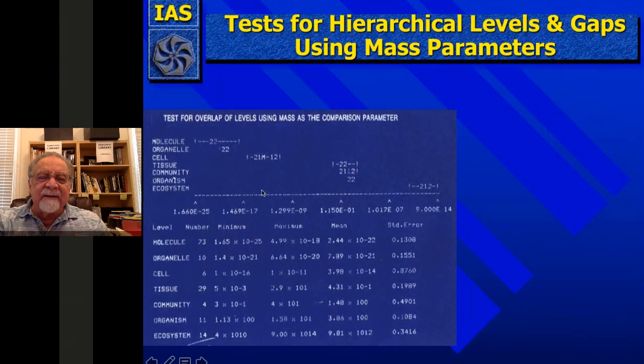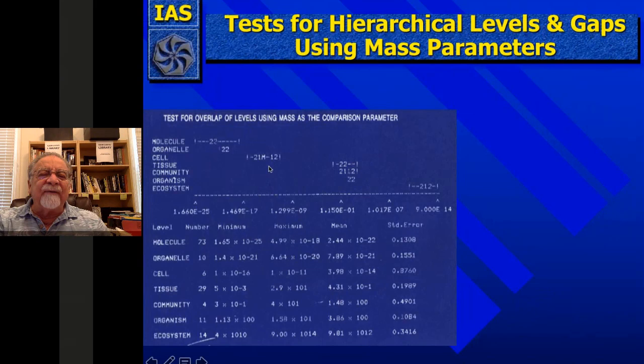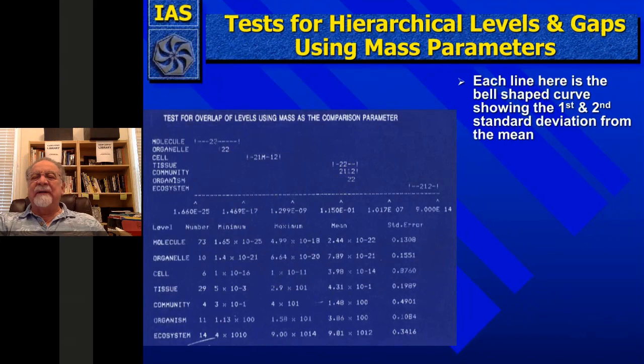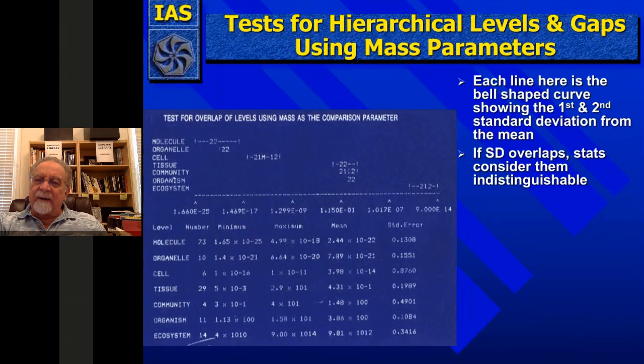My statisticians told me that whenever you have the first and second standard deviation of the bell curve overlapping, that's not different levels — that's the same level. So you can see we had four levels, not the seven levels we thought were in intuitive organization of hierarchical levels. We're talking about a theory of emergence and trying to submit it to some kind of data — trying to find out what are the hierarchical levels that truly exist in the data.